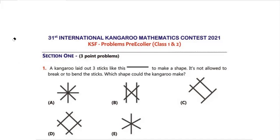Question 1: A kangaroo laid out three sticks like this. This is the type of stick, and they laid out three sticks to make a shape. It's not allowed to break or bend the sticks. Which shape could the kangaroo make? Whenever we have a question, let's look at the options and see which one we can eliminate.